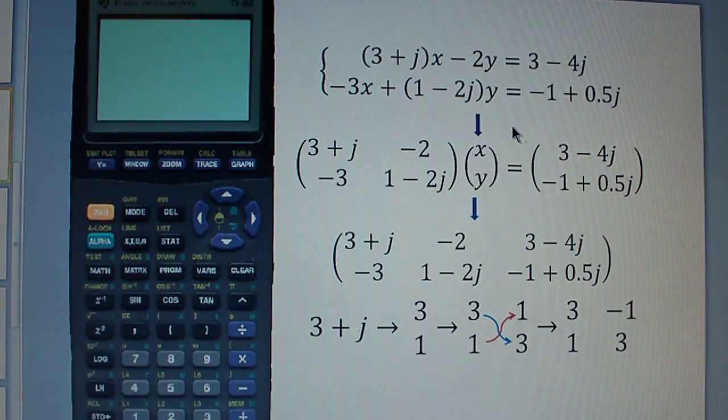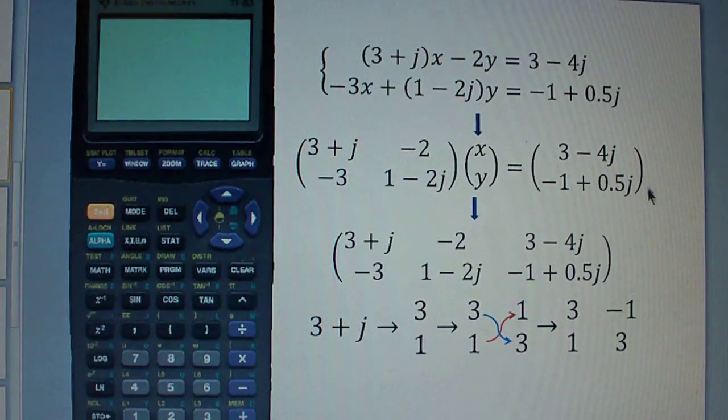x and y are two unknowns. And like the real case, you can just take the coefficient matrix here and change this into an Ax equals b type matrix equation.